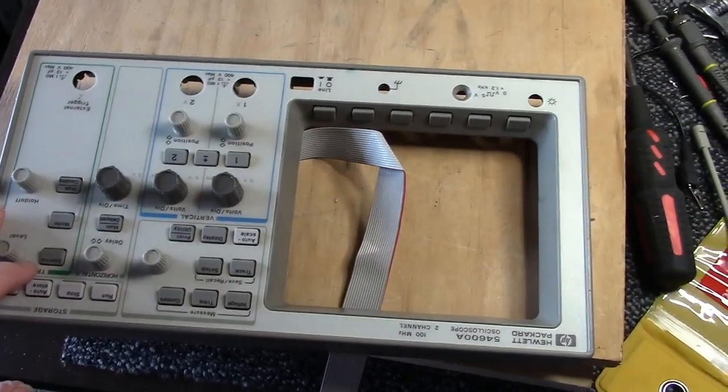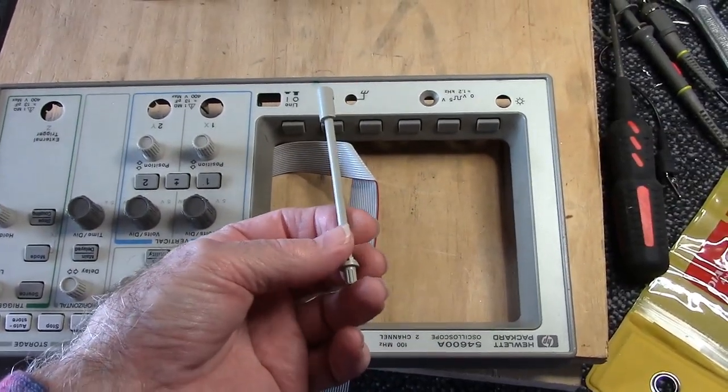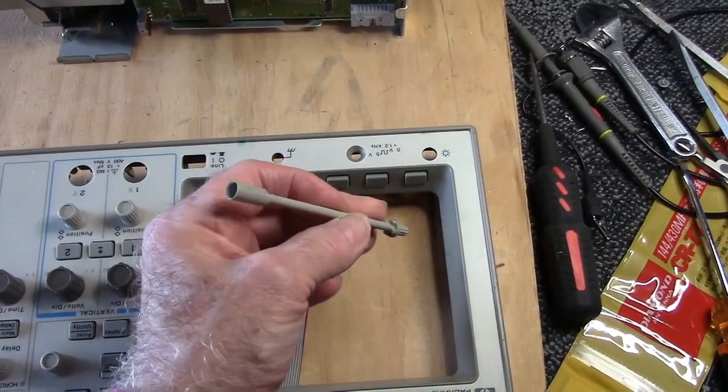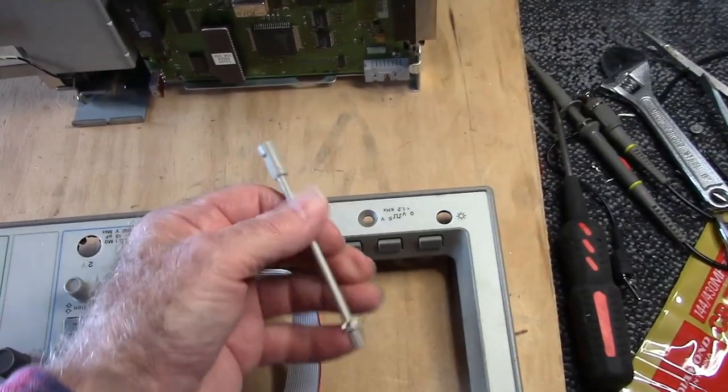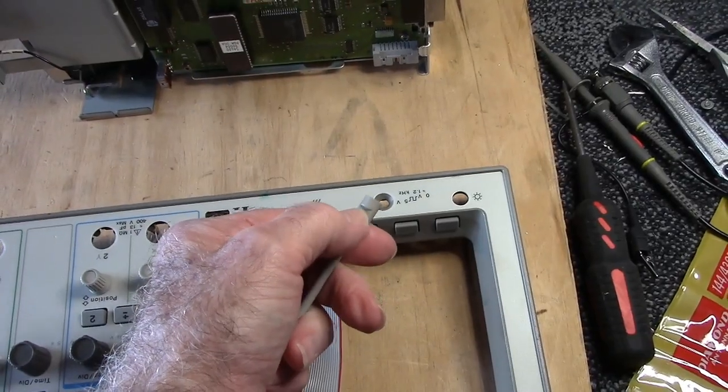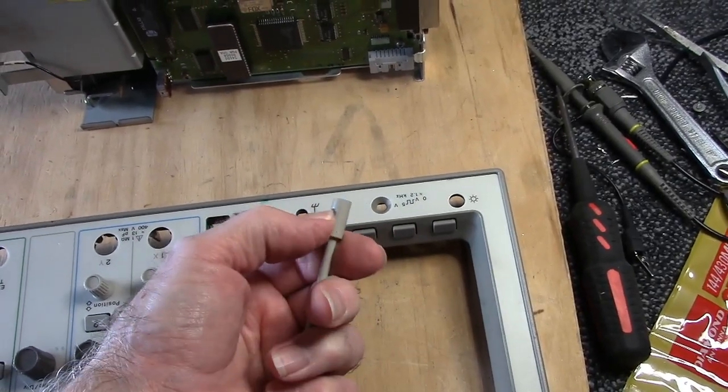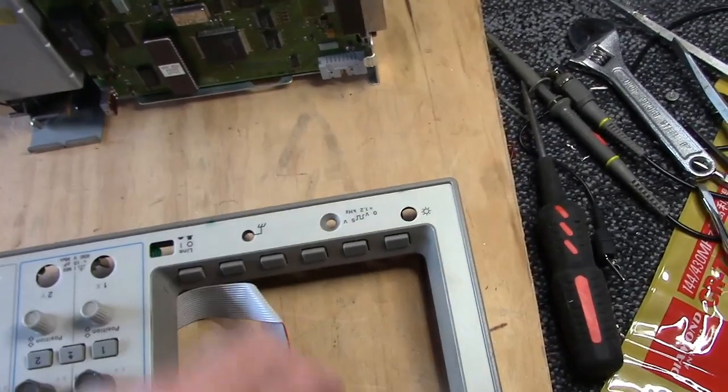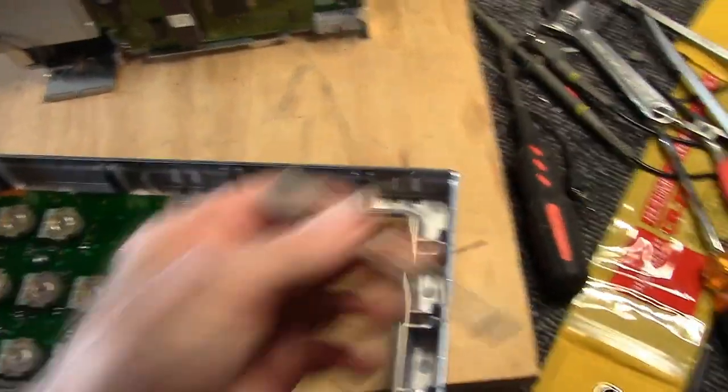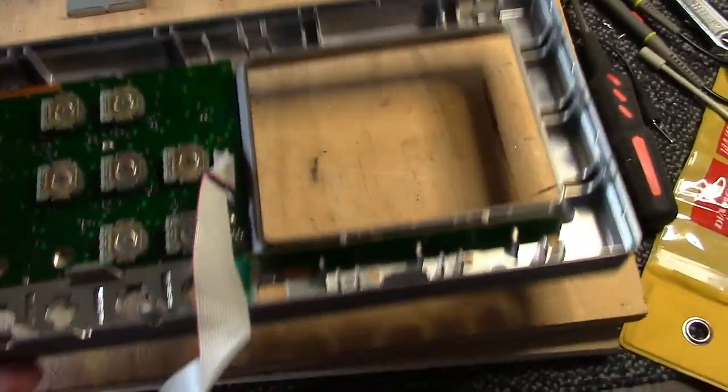That way you can get the front panel out here. The only thing you have to remove is this brightness control. It's a long shaft that mates inside the main frame, comes out of the front. The front's got a plastic flat on here that allows you to put it through the hole. Remove this control and then you can take the front panel off.